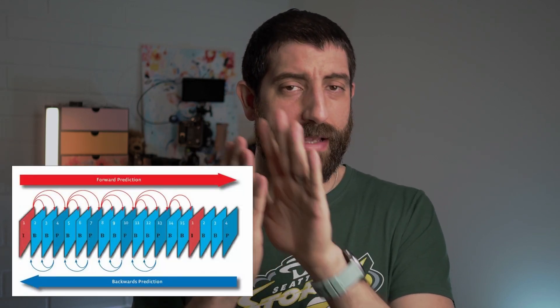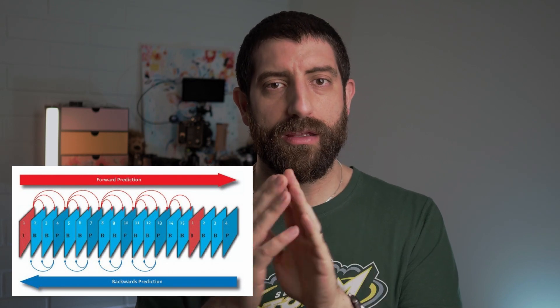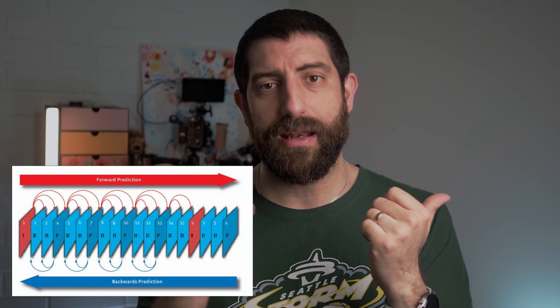Most consumer cameras record video using long GOP. Some cameras, like the Olympus OM-1 Mark II I'm shooting on right now, have all-intra codecs — the GH5 has all-intra, and I believe the a7S III has all-intra too. All-intra means that each frame in your video is encoded within itself. Long GOP, or long group of pictures, means that to encode or compress a single frame, it uses the previous and following frames — a group of pictures — to define what is in that one frame.